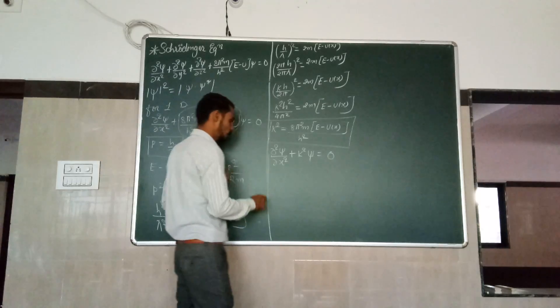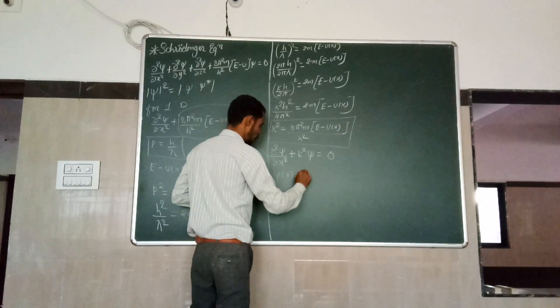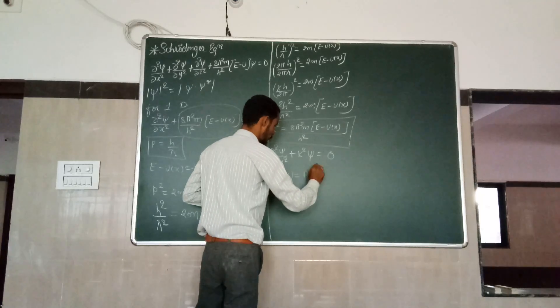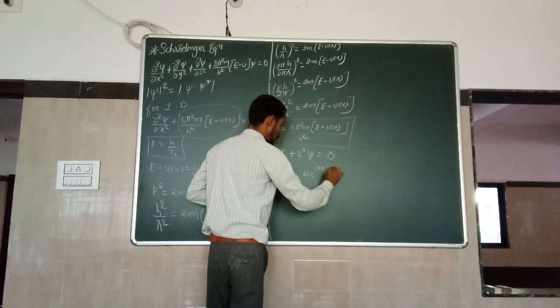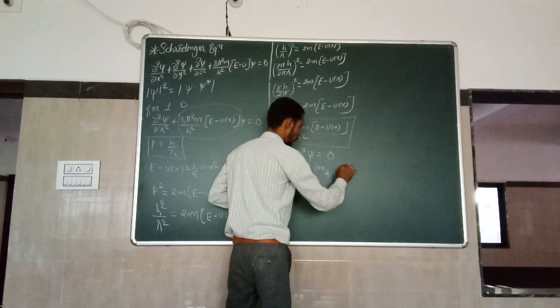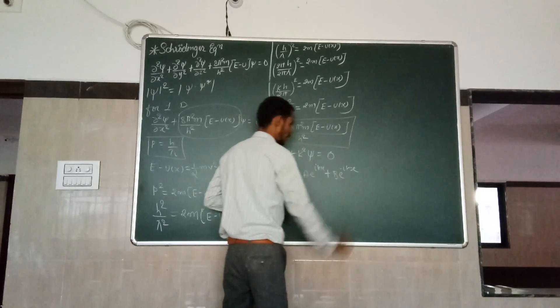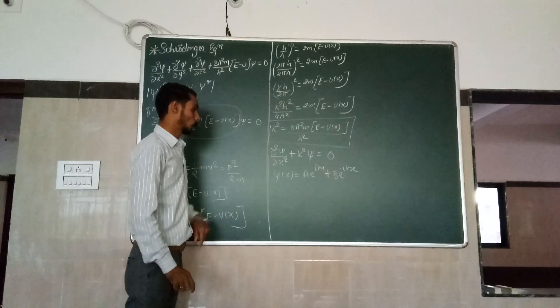The solution of this second-order differential equation is: psi(x) equals A times e to the power i k x, plus B times e to the power minus i k x.